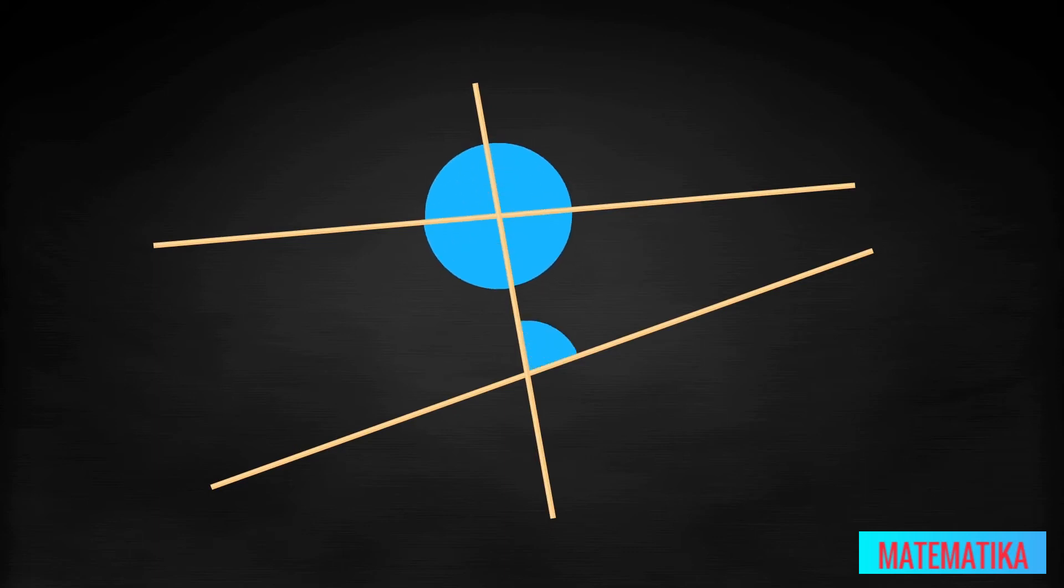Lay a third strand across the first two. You see you have created eight angles at the two intersections. Look at the same side interior angles toward the close ends of spaghetti.